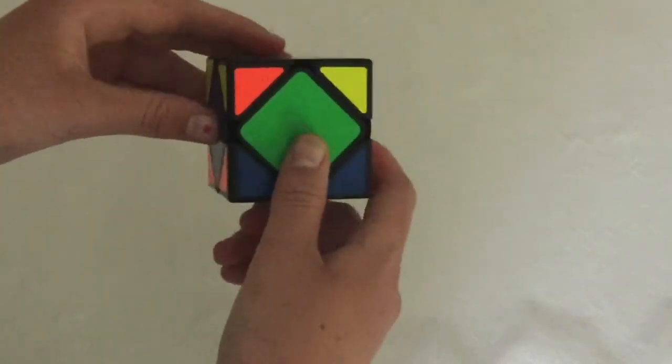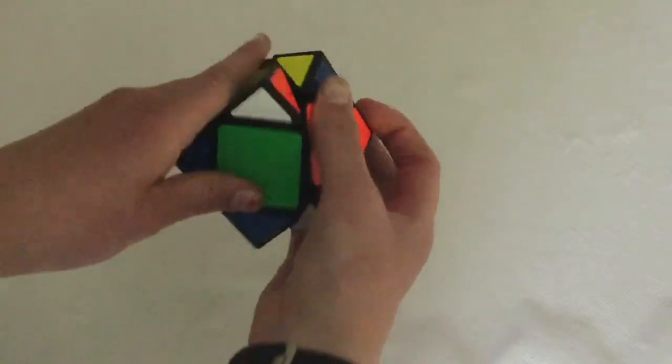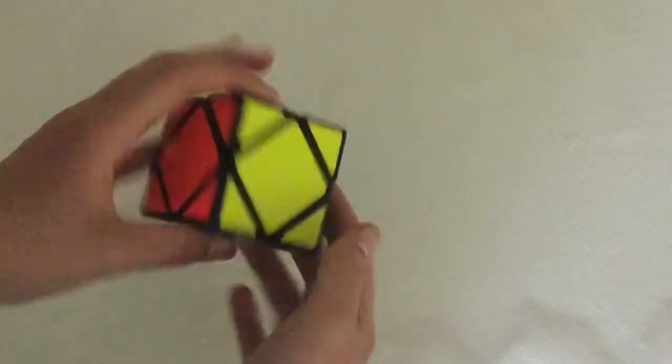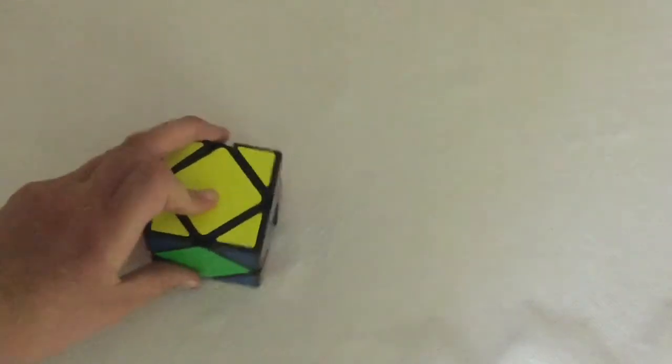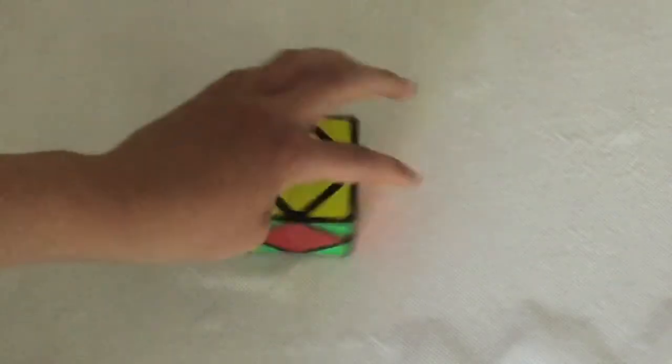All right, so this is the algorithm we're going to do. We're going to go up, up, down, down. That's it. That's all you have to do to solve the yellow side. Super duper simple. That's personally why I love this cube.